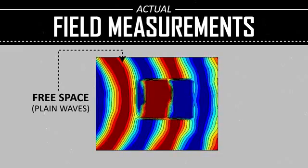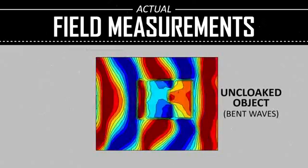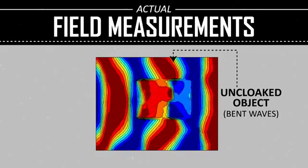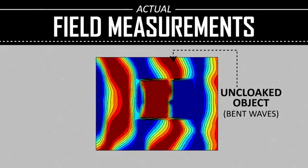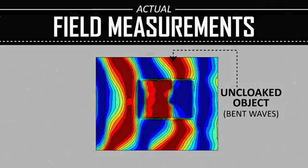When you put the object there without a cloak, what ends up happening is it bends the wave around it a little bit and it also scatters it in different places. So it'll create shadows behind it and stuff.